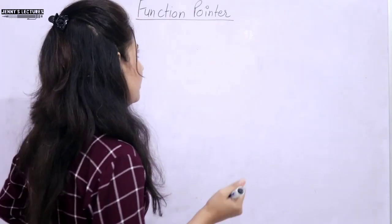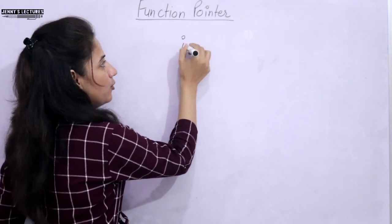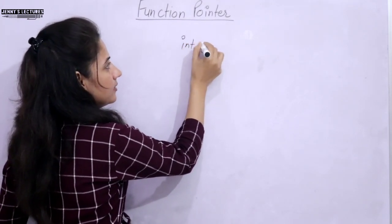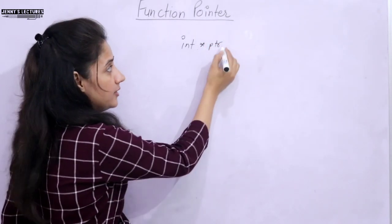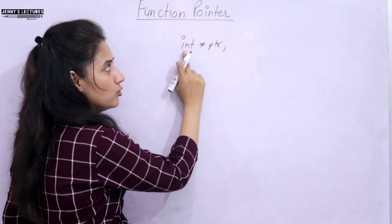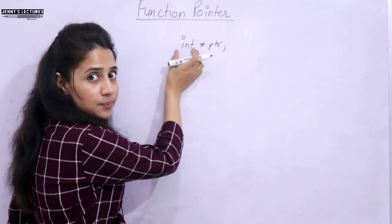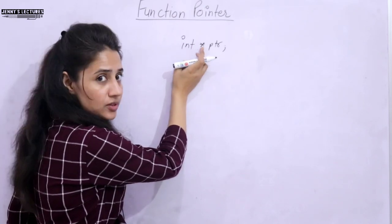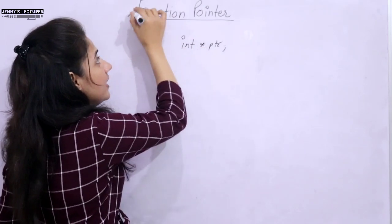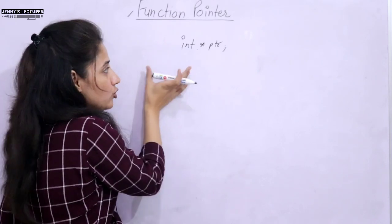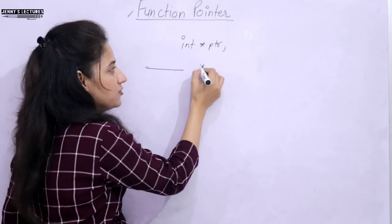Now let us see what is a function pointer. I hope you know what is an integer pointer — how to declare it: int asterisk and pointer name PTI. That's it. It's an integer pointer, or a pointer to int. For a float pointer, just write the data type, float asterisk, the sign, and the pointer name. Now, how to declare a function pointer? Same — you have to write the return type first, then we write asterisk, then the pointer name.